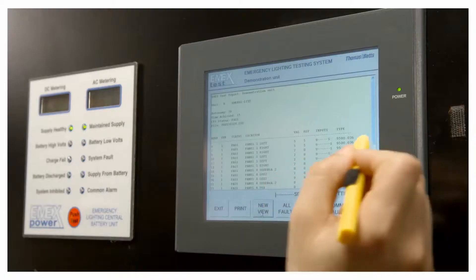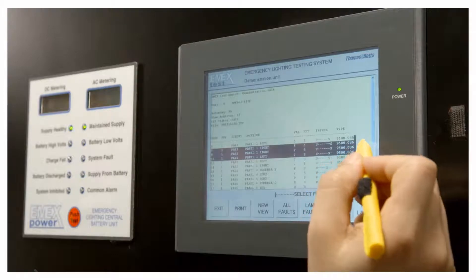EmergyLight offer a number of automatic testing solutions, including MX test for central power systems. This is available as a door-mounted touchscreen option. It allows any luminaire, including mains lighting, to be part of the emergency lighting and be incorporated into the automatic testing system.